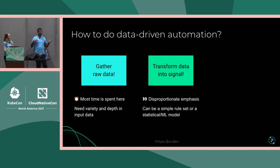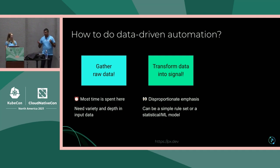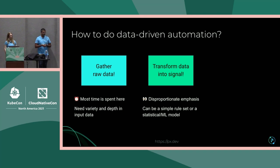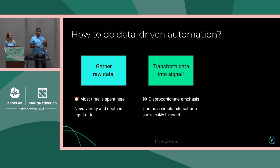The next thing you typically do after you gather the data is some kind of data transformation. This actually gets the most disproportionate emphasis — people talk about machine learning models and sophisticated tools. But something here could be a simple statistical machine learning model, a regular expression, or aggregates. The goal is to transform the raw data into some signal that can be usable downstream. For example, you take CPU information for a bunch of different replicas of your application and notice that one particular replica is extremely high relative to the others.